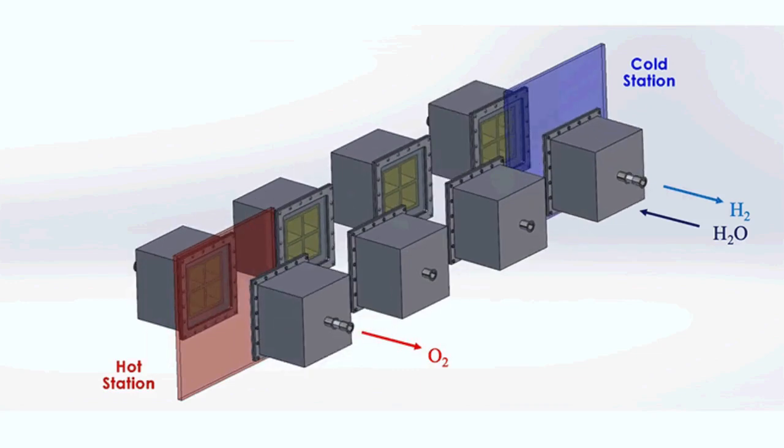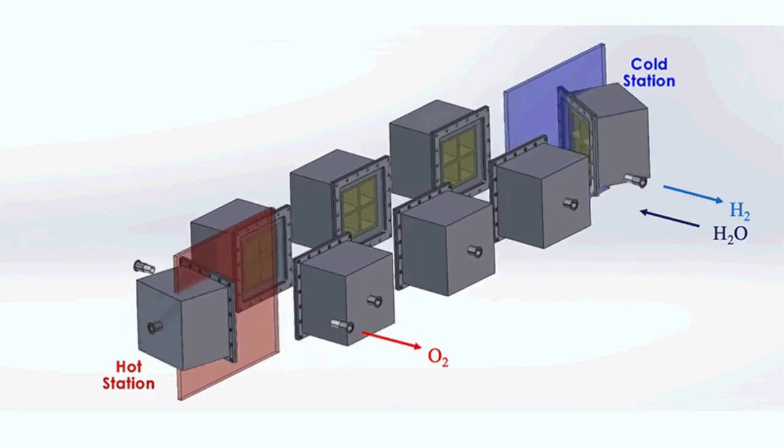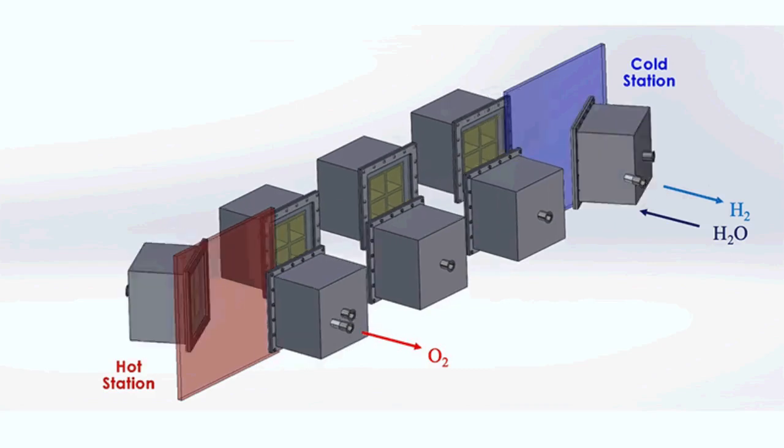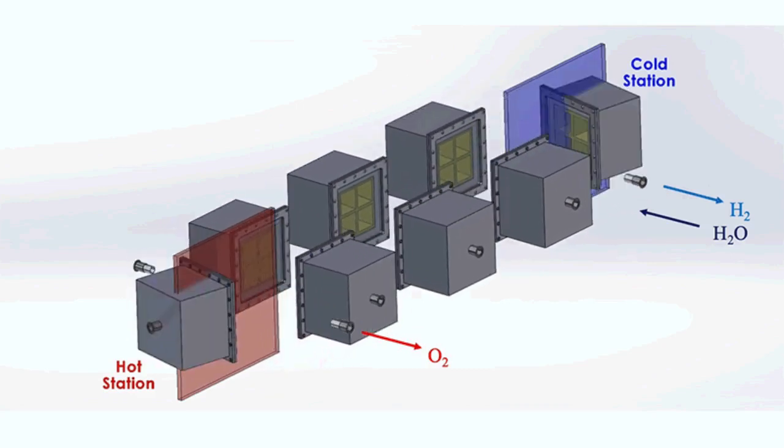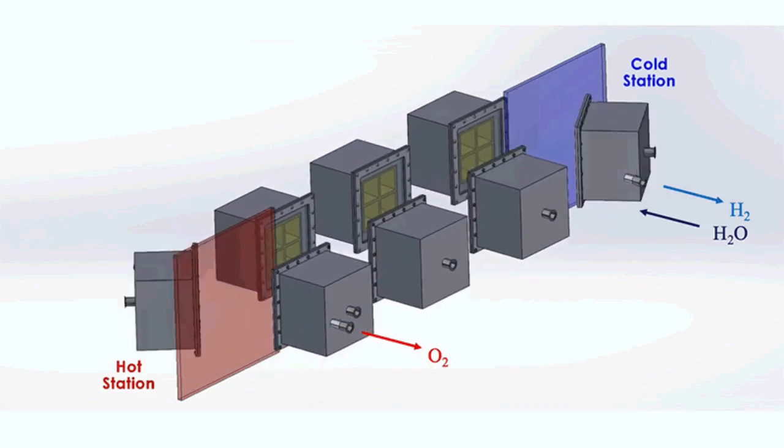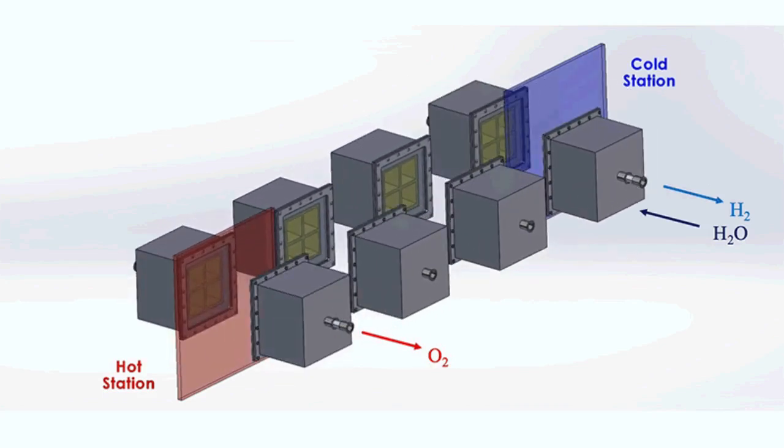That metal would then be in a reduced state, ready to grab oxygen from steam. For this to happen, the reactor would move to a cooler station at temperatures around 1000 degrees Celsius, where it would be exposed to steam to produce hydrogen.